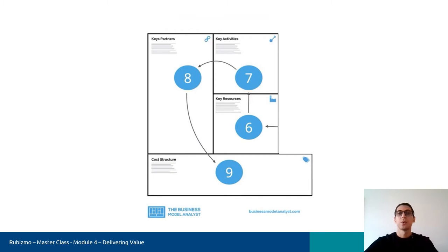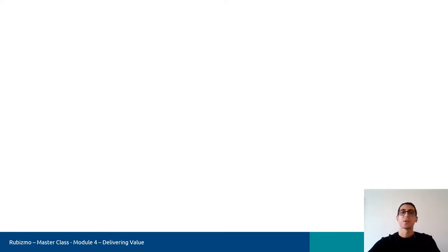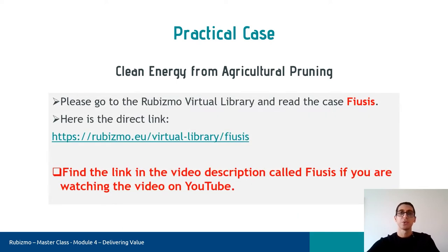Now it's time to work in more detail, and I want to show you how a company can take action in the backstage to improve their operations and manage their costs. Since we haven't worked on the energy sector yet, today we want to focus on a company that produces energy from agricultural prunings. Please go to the Rubismo Virtual Library and read through the case pieces. You can find the link in the video description if you are watching on YouTube. In the next slide, you will also be shown a short video of that company.